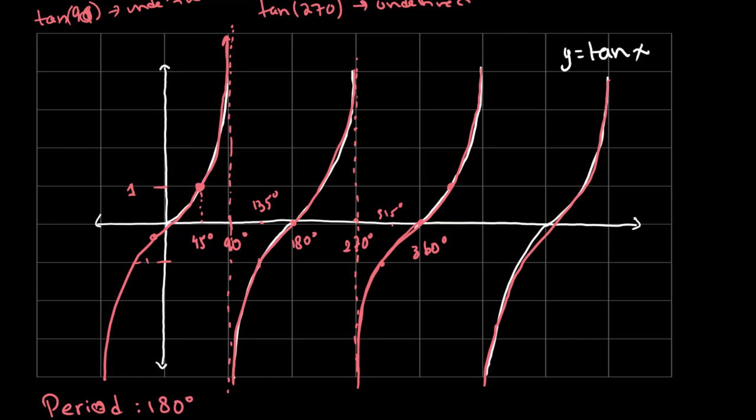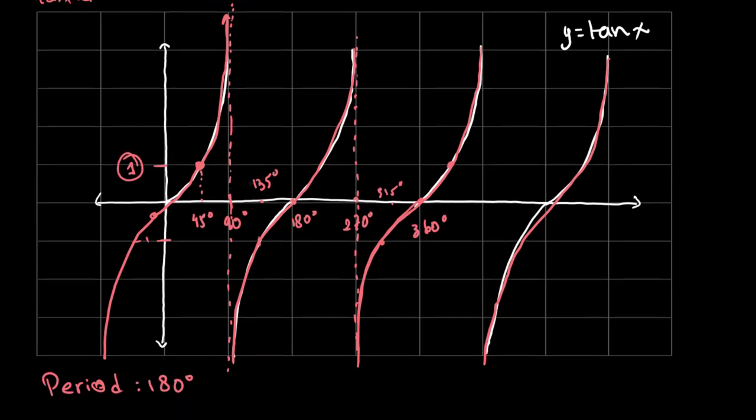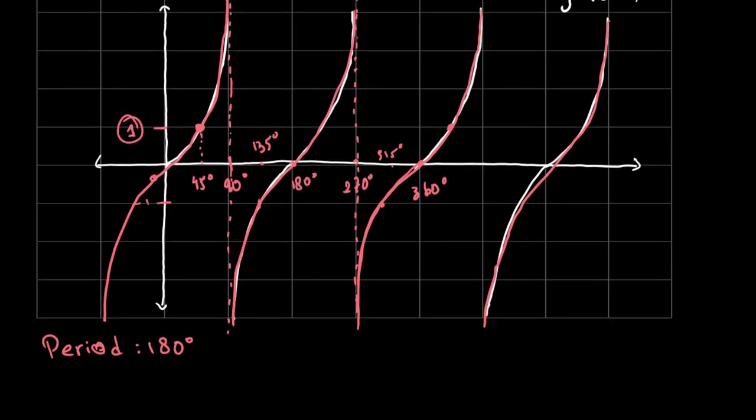The key points to remember for tan: at 45 degrees, tan equals 1. At 90 degrees, the graph goes up infinitely and never touches the asymptote. And the period of the graph is 180 degrees.